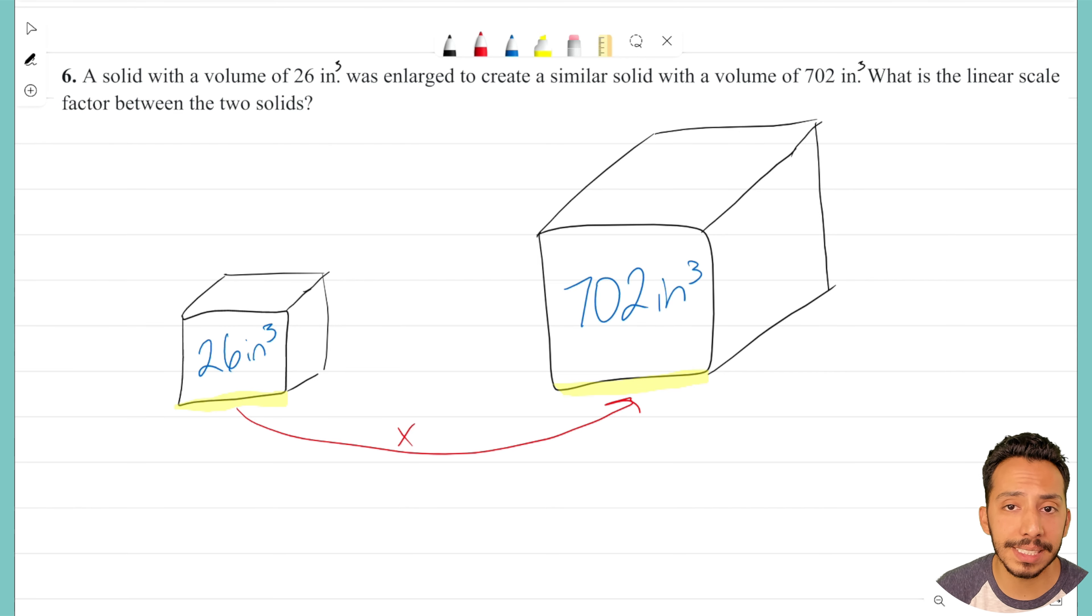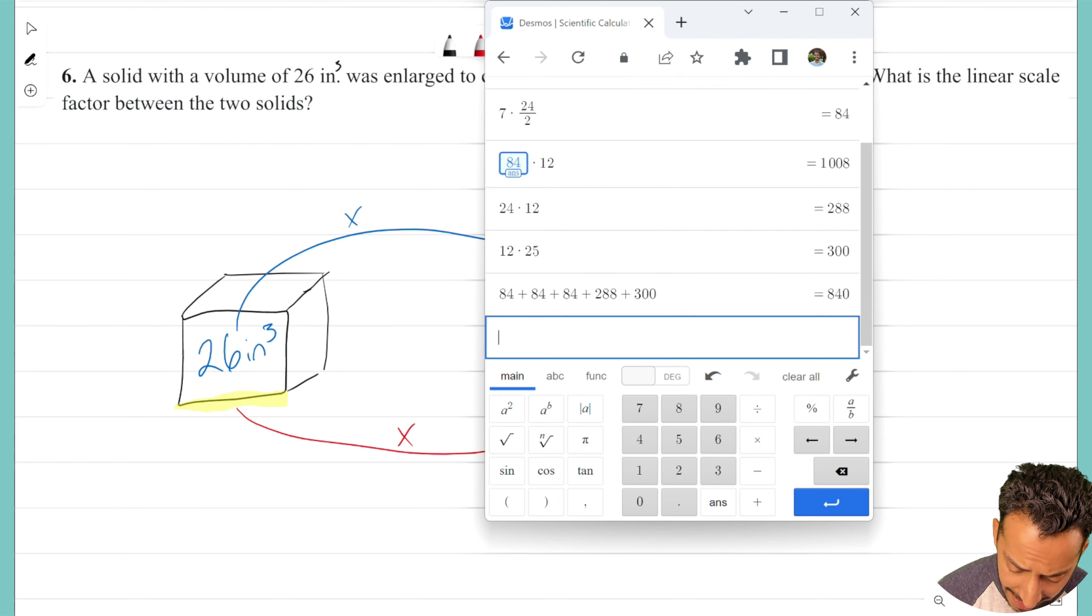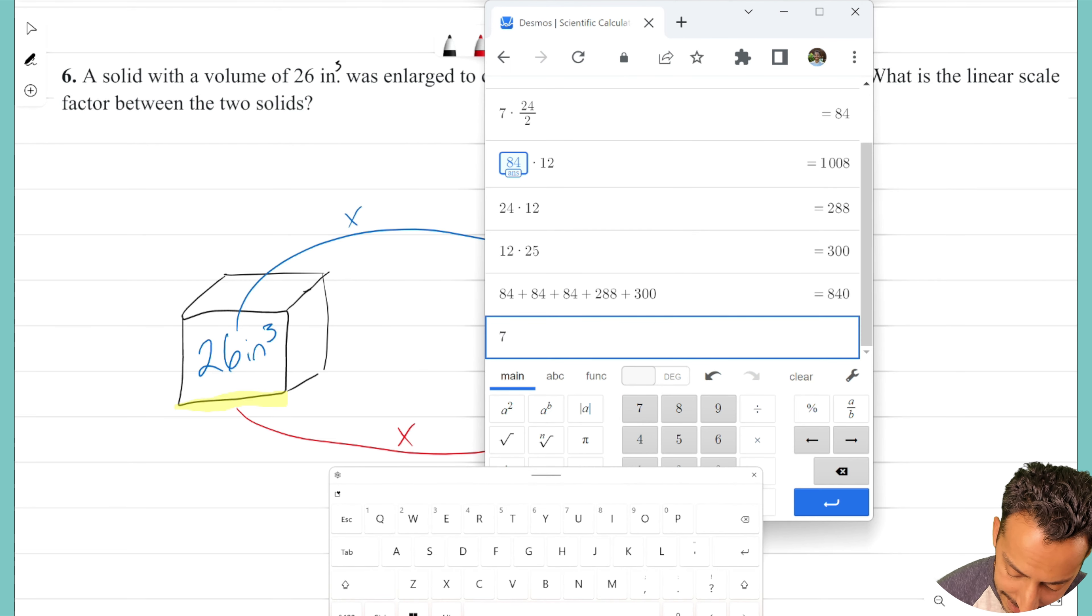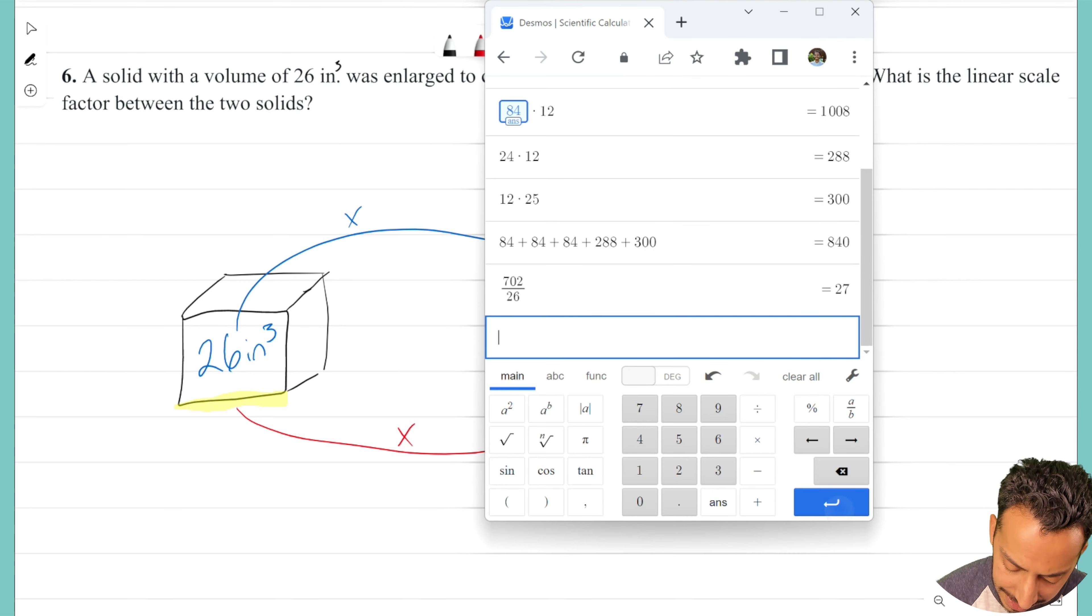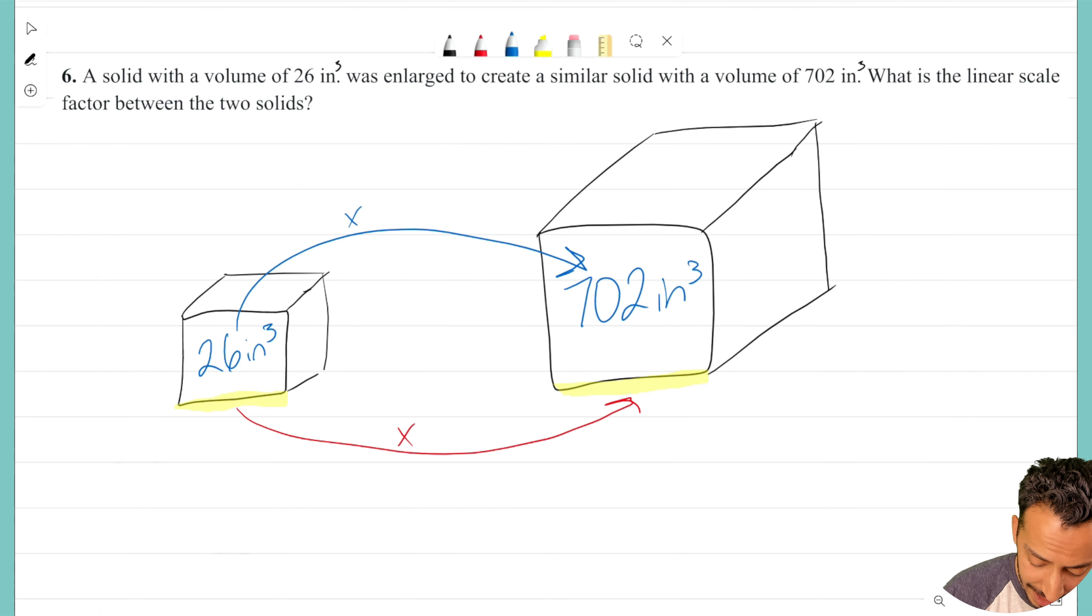But all I know is that our volume went from 26 and then it increased to 702 inches cubed. Well, you know what? I can find out what that was multiplied by, right? I can figure out what I multiplied 26 by. I just got to get a calculator and I got to type in 702 divided by 26. If I do that, look right there. I see that it was multiplied by 27.